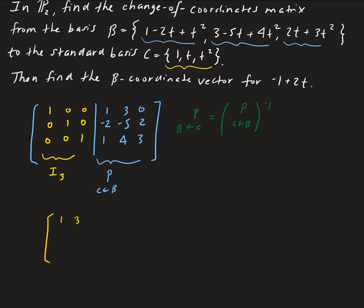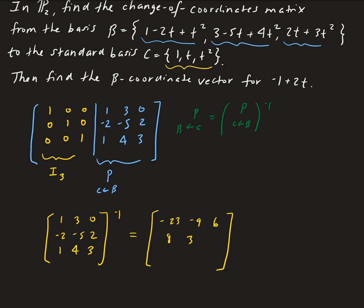So let's do that. The matrix from beta to C is: 1, 3, 0 / minus 2, negative 5, 2 / 1, 4, 3. The inverse of this turns out to be: minus 23, negative 9, 6 / 8, 3, minus 2 / negative 3, negative 1, 1.